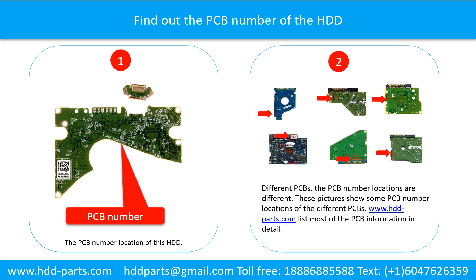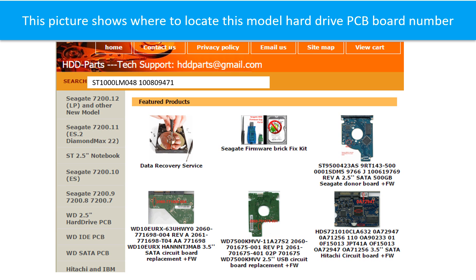Different printed circuit boards have different PCB number locations. Picture 2 shows some printed circuit board number locations of different PCBs. If you want to find out your own PCB number, you may go to www.hdd-parts.com, which lists most of the PCB information in detail. We use the hard drive model number, PCB board number, PCB board sticker number, and CPU number as references to search for the donor PCB board.